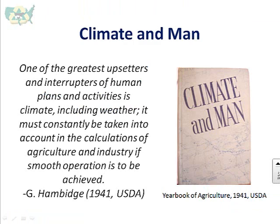What it says is: of the greatest upsetters and interrupters of human plans and activities is climate, including weather. It must constantly be taken into account in the calculations of agriculture and industry if smooth operation is to be achieved. This whole calculating of weather and climate and how it affects animal ag is part of the message we're trying to get across in this online course.